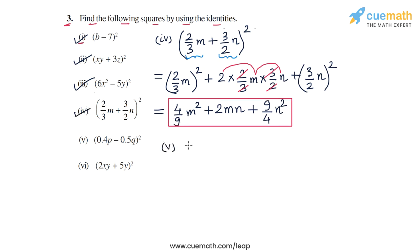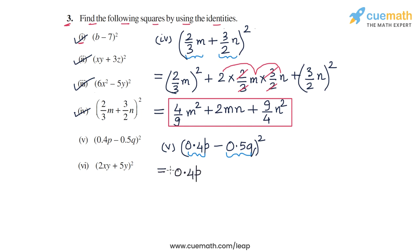Next we come to part 5, in which we have to calculate 0.4p minus 0.5q whole square. This is of the form a minus b whole square, where a is 0.4p and b is 0.5q. We expand a minus b whole square as a squared minus 2ab plus b squared. So we get 0.4p whole square, minus 2 times 0.4p times 0.5q, plus 0.5q whole square.